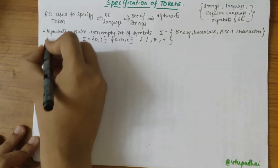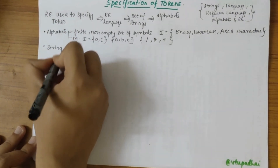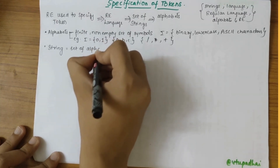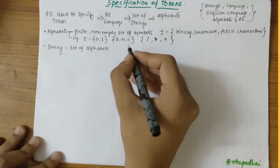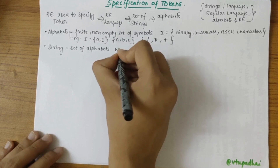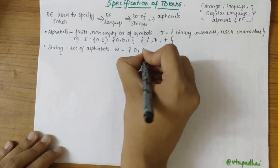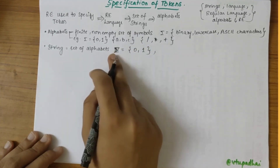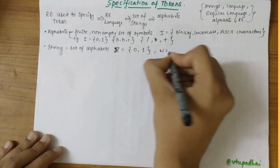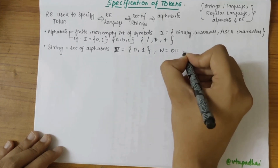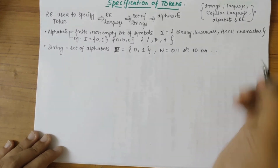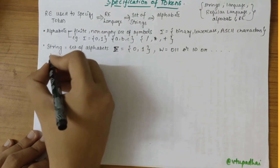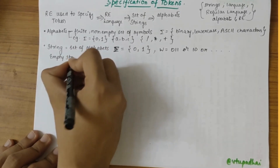After alphabets, we have strings. When you combine a set of alphabets, you obtain strings. Strings are denoted by W. So W can be defined as 0, 1, 1 or 1, 0 — any combination comprising only of 0s and 1s, if the alphabet Sigma is {0, 1}.